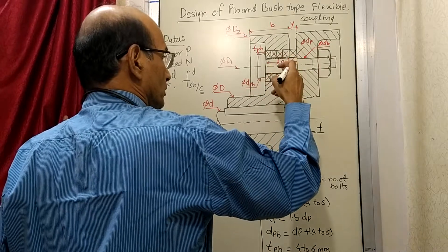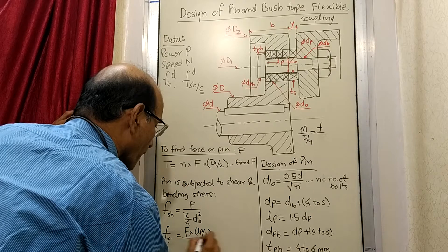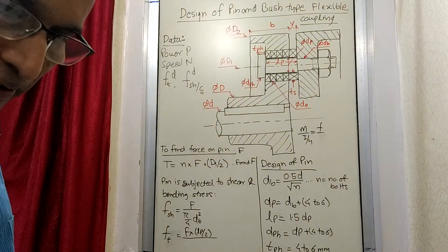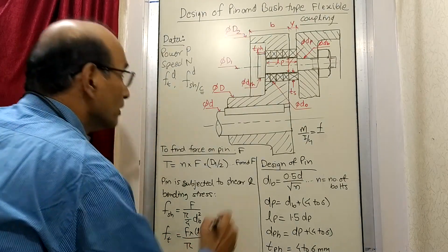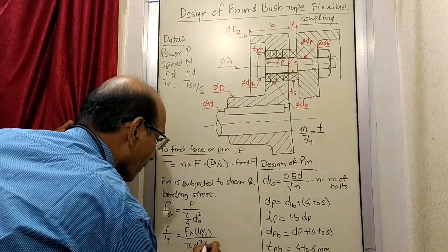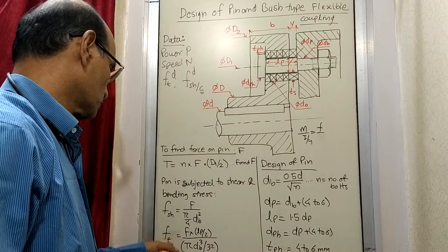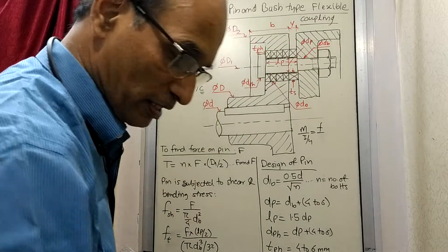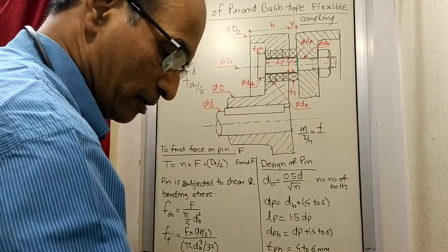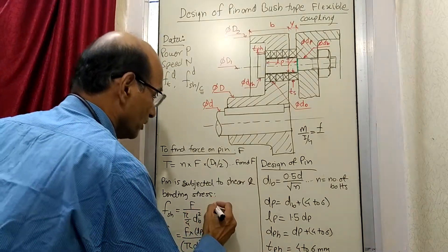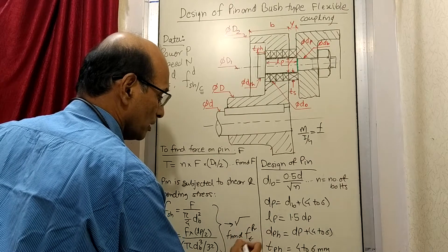M is force into distance, which is Lp by 2. So force times Lp upon 2 gives the moment. This moment is divided by Z, where Z for the pin is pi times db cubed by 32. So these are the two stresses acting on the same section: shear stress and bending stress. We are now going to combine them by the principal stress equation to find principal stresses F_t_principal and F_shear_maximum.